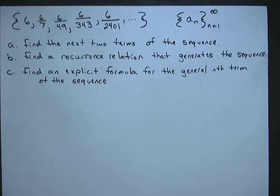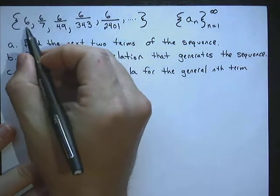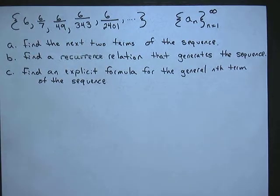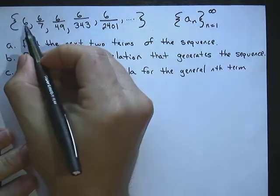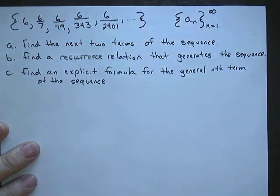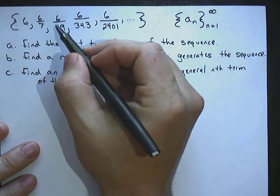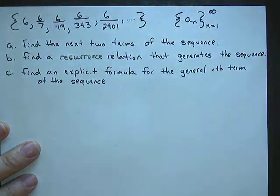So in order to find the next two terms of the sequence, we have to see what the pattern is here. It appears that each time you get a new term, it is 1 seventh of the term before it. In other words, if I multiplied the 6 by 1 seventh, I would get 6 over 7. If I multiplied the 6 over 7 by 1 seventh, I'd get 6 over 49, and so on and so forth.